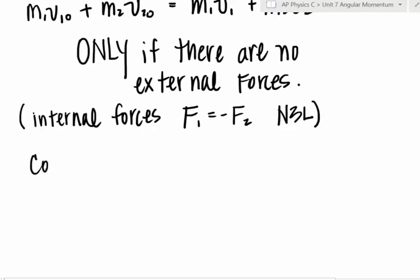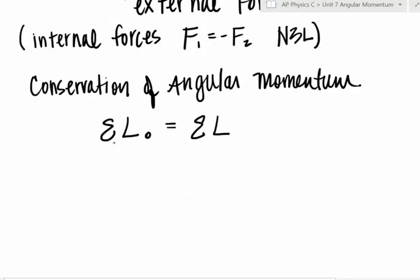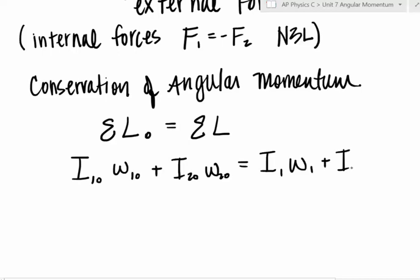But then we can have the conservation of angular momentum. Just like we can sum up all the initial linear momentum, we can sum up all the initial angular momentum and set it equal to the final angular momentum. I could have I1 initial omega 1 initial plus I2 initial omega 2 initial is equal to I1 final omega final plus I2 omega 2 because you can change the moment of inertia very easily. An ice skater brings her arms in, throws her arms back out to slow back down.